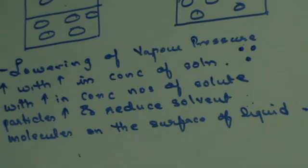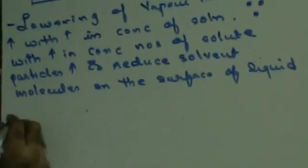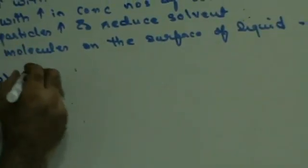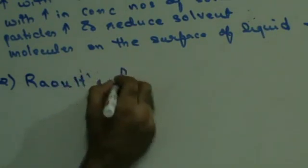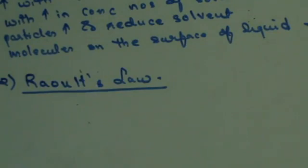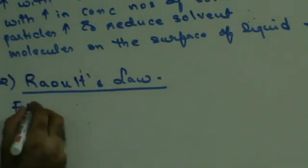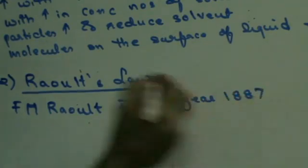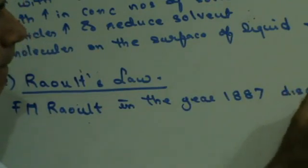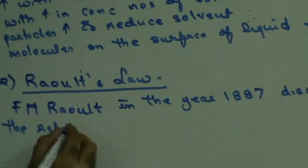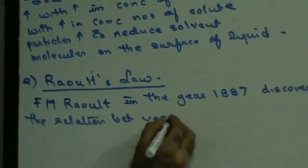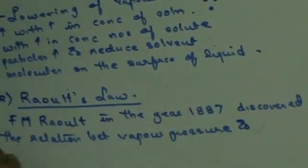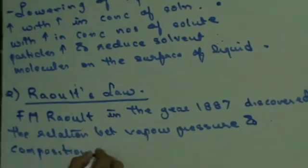Now, you have a law called Raoult's Law. This was discovered in the year 1887 by the chemist F.M. Raoult. He discovered the relationship between vapor pressure and the composition of the solution.